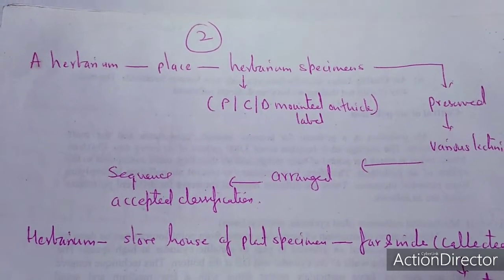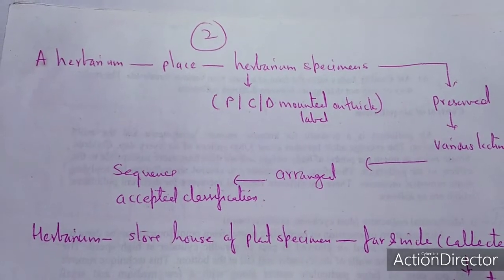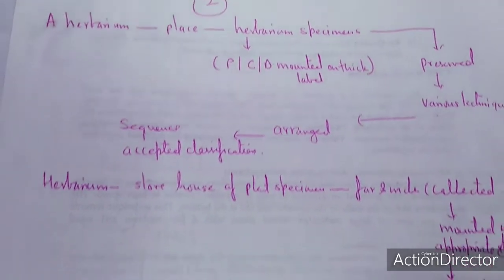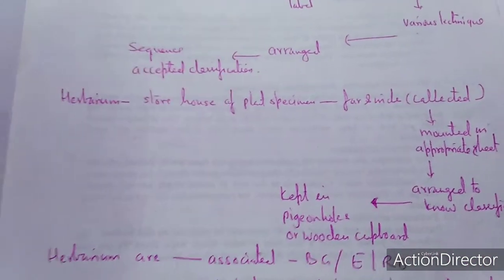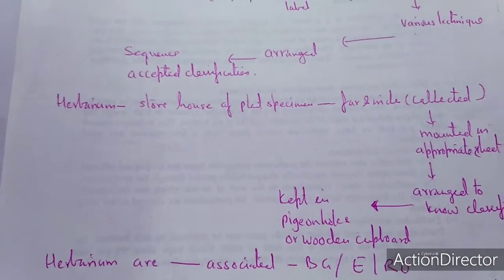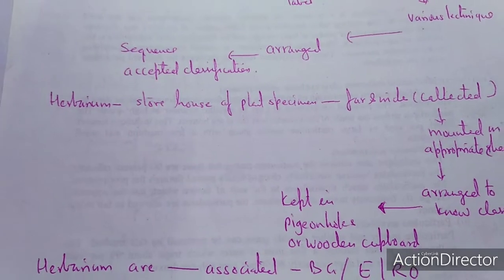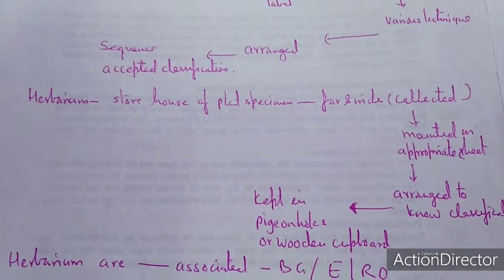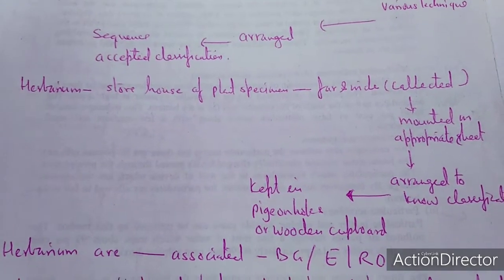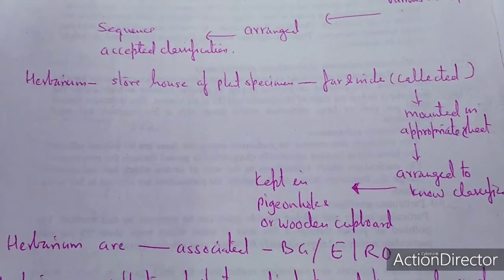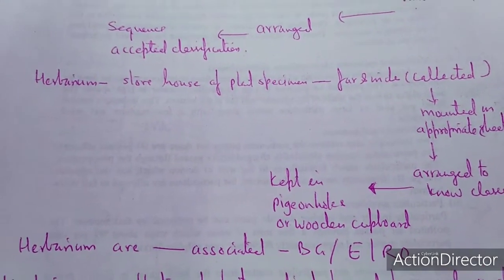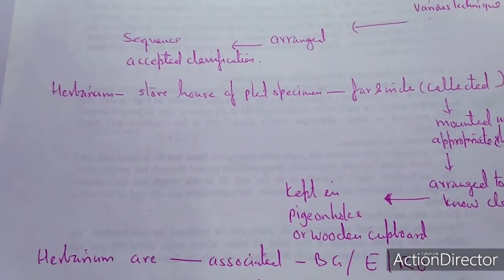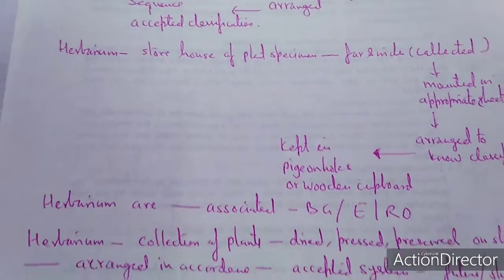The herbarium specimen is collected, selected, and then mounted on an appropriate sheet to formulate the herbarium specimen. The herbarium is a storehouse of plant specimens collected from far and wide. They have been mounted on an appropriate sheet and arranged to some known system of classification, and kept into pigeon holes or wooden cupboards specially prepared for this purpose.